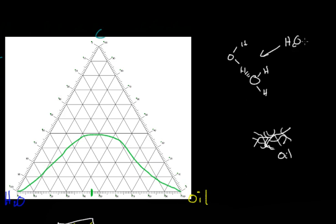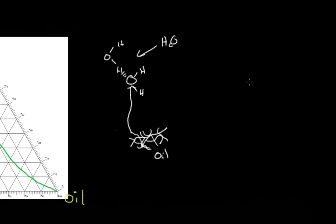Surfactant is basically, you could think of it as a water head attached to a long carbon chain. So you may have an oxygen attached to a hydrogen, and then you have this long carbon chain. So this carbon chain wants to interact with the oil, and this hydrogen and this oxygen want to interact with a water molecule.